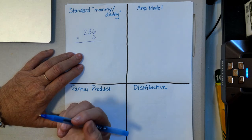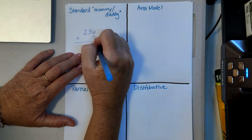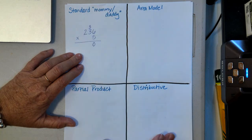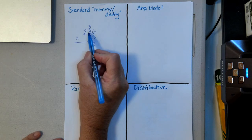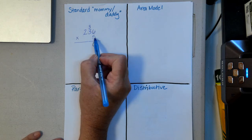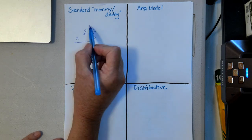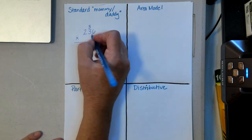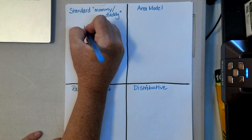We can't put thirty in the ones place because it's larger than nine. So I'm going to exchange those thirty ones for three tens, giving me zero ones. I'll carry those three tens over to the tens column. Now I multiply five times three tens, which gives me fifteen tens, and I add the three I carried to get eighteen tens.